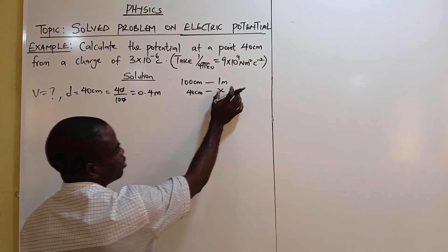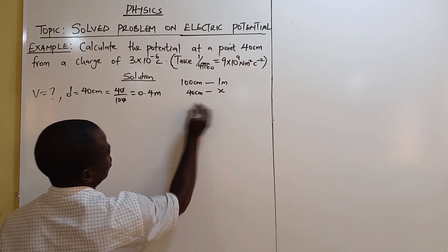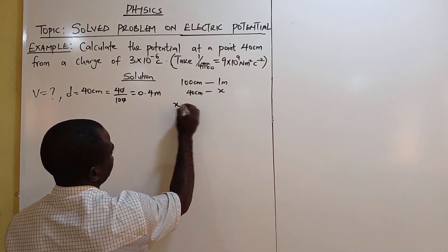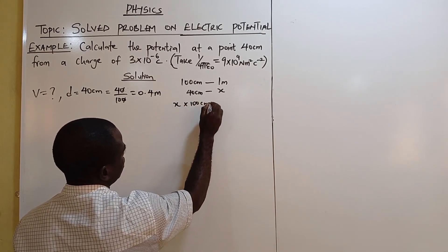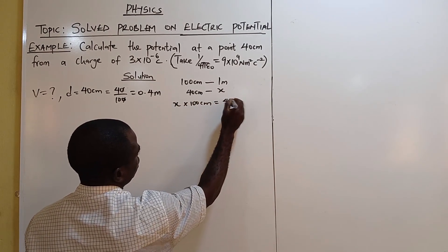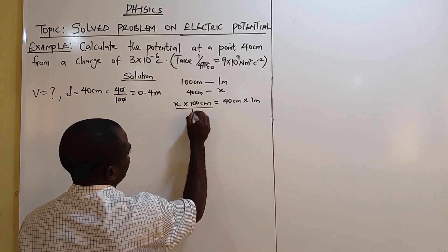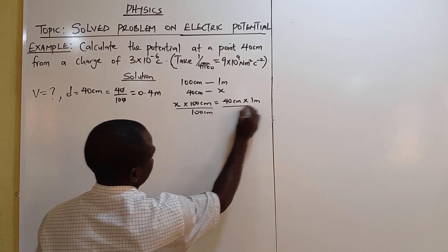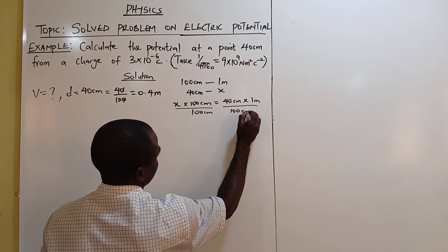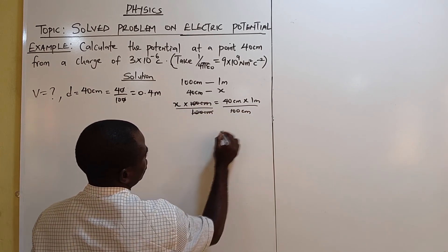The centimeters will be on one side. We are looking for the meters on the other side. We cross multiply: X times 100 centimeters equals 40 centimeters times 1 meter. Then we divide by 100 centimeters.